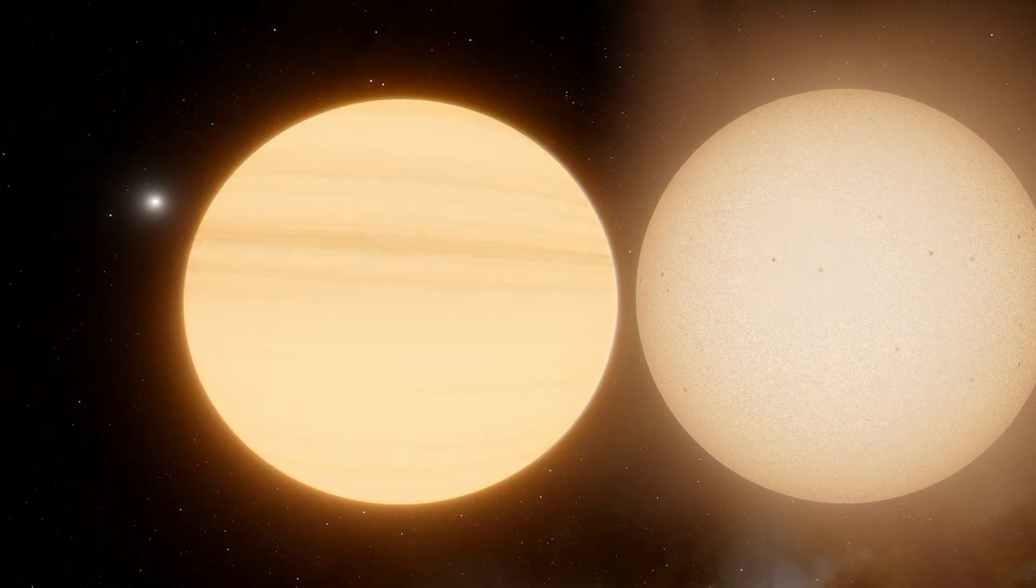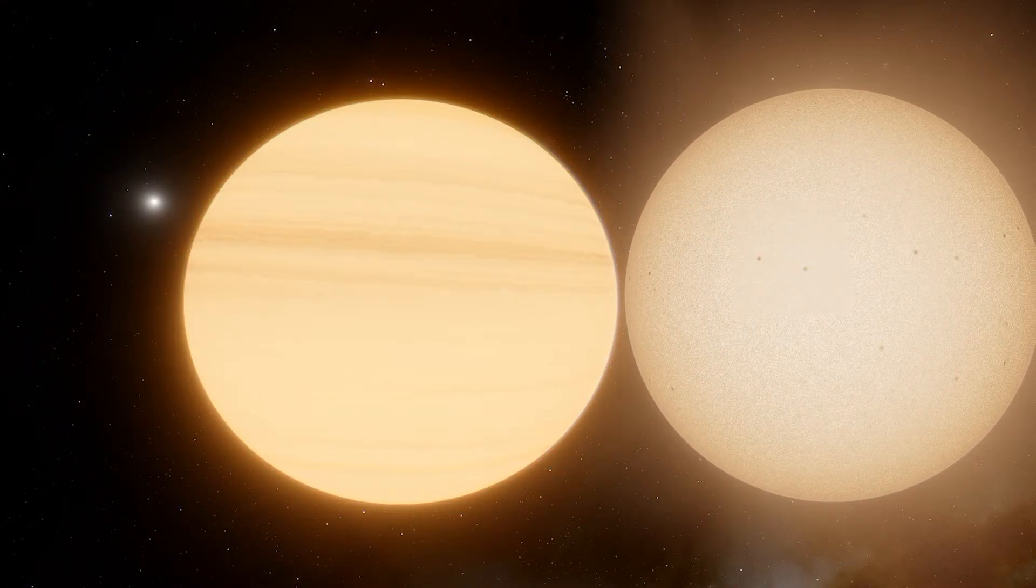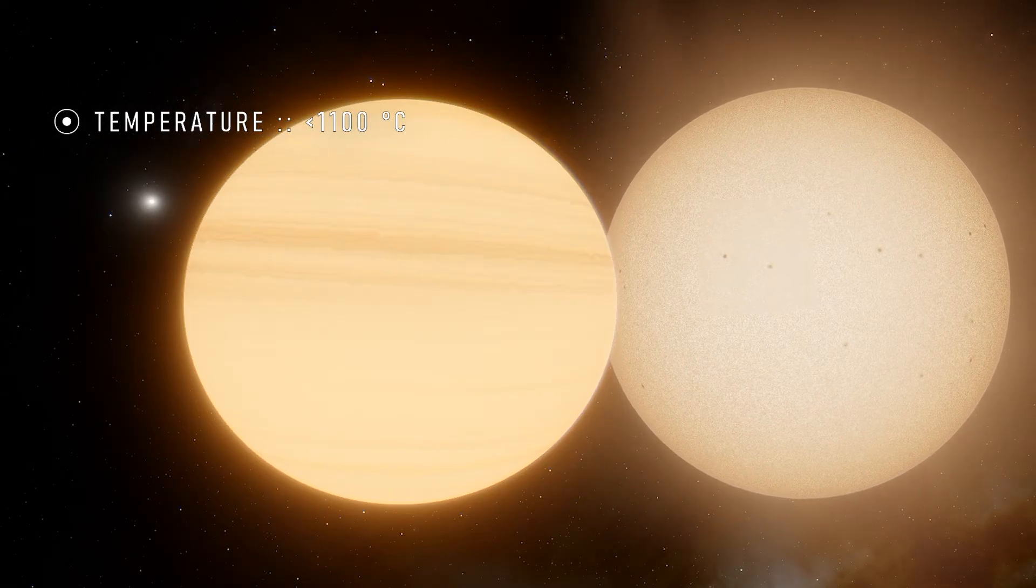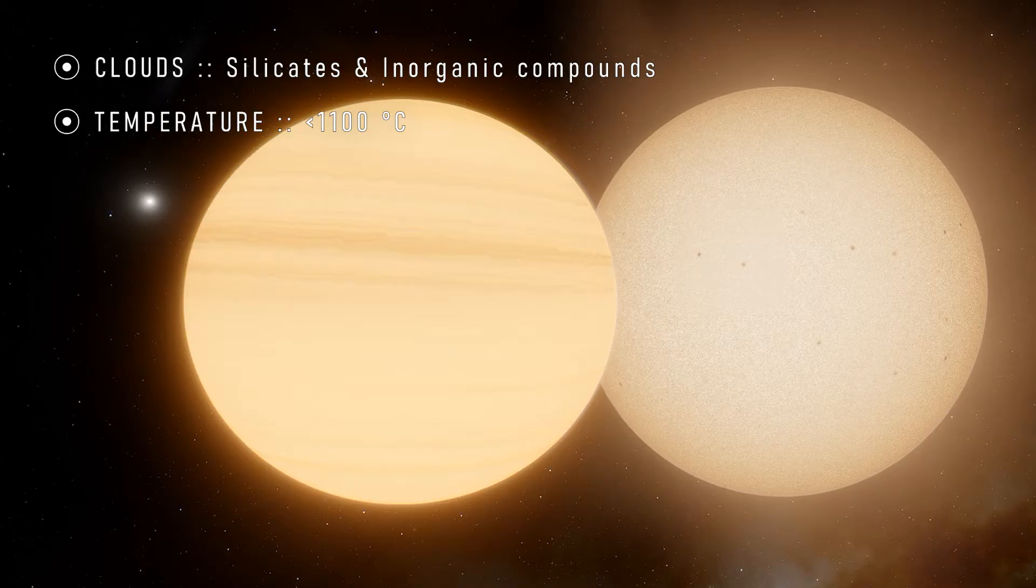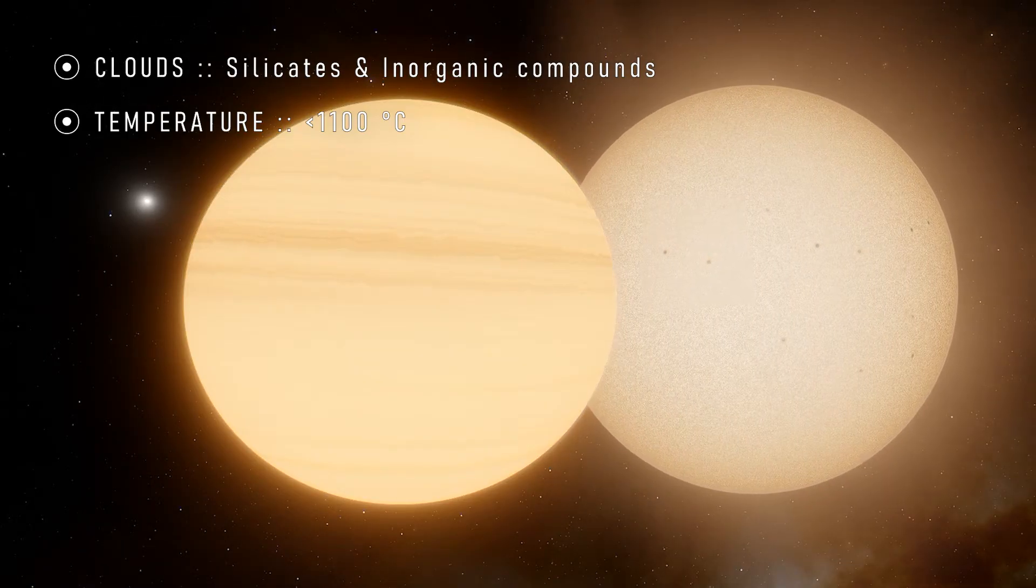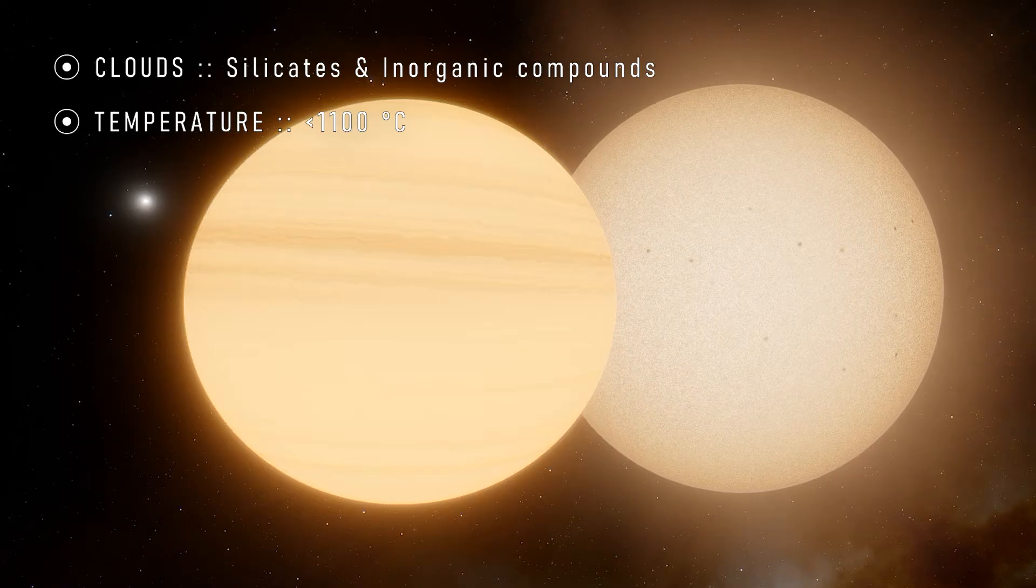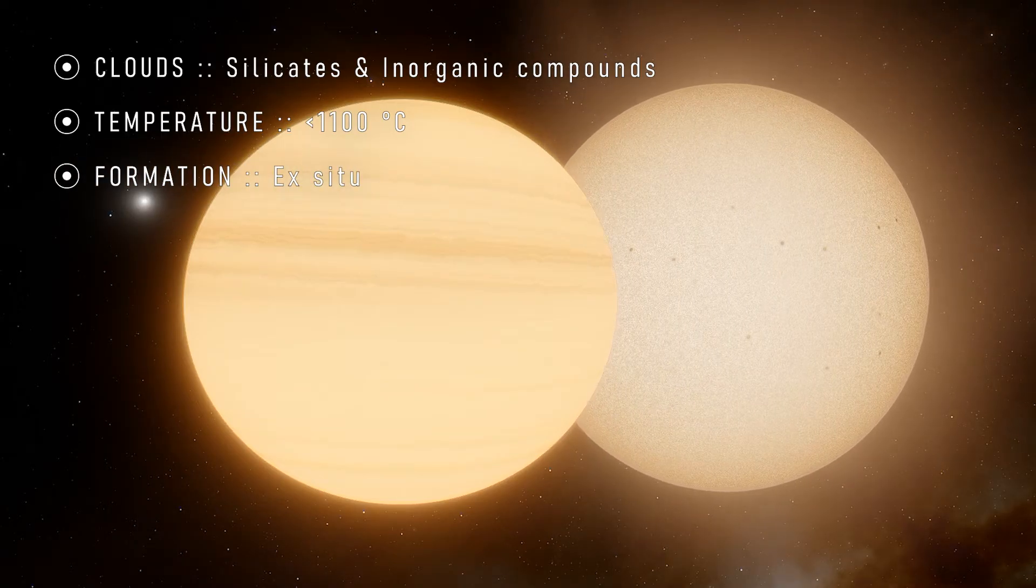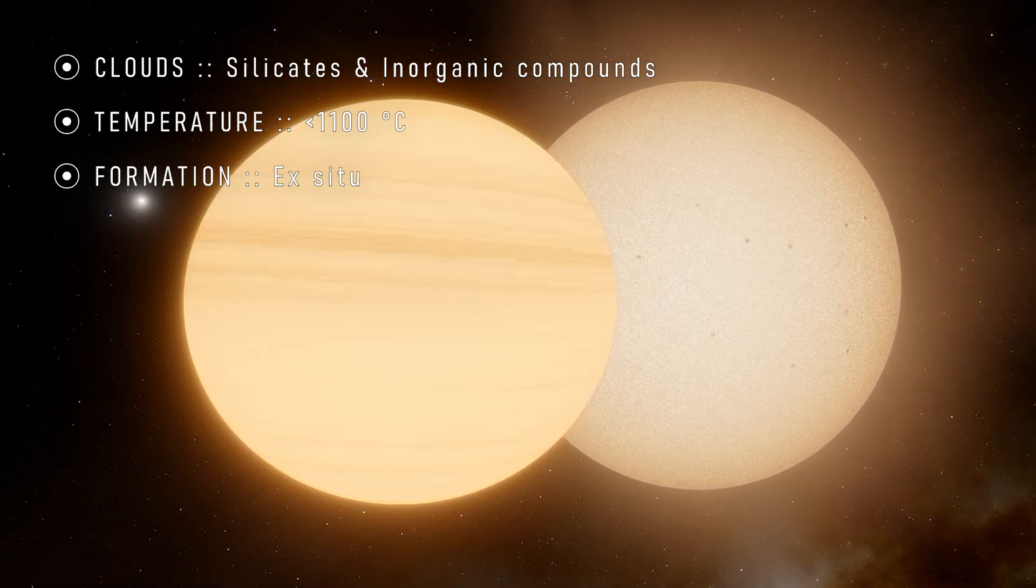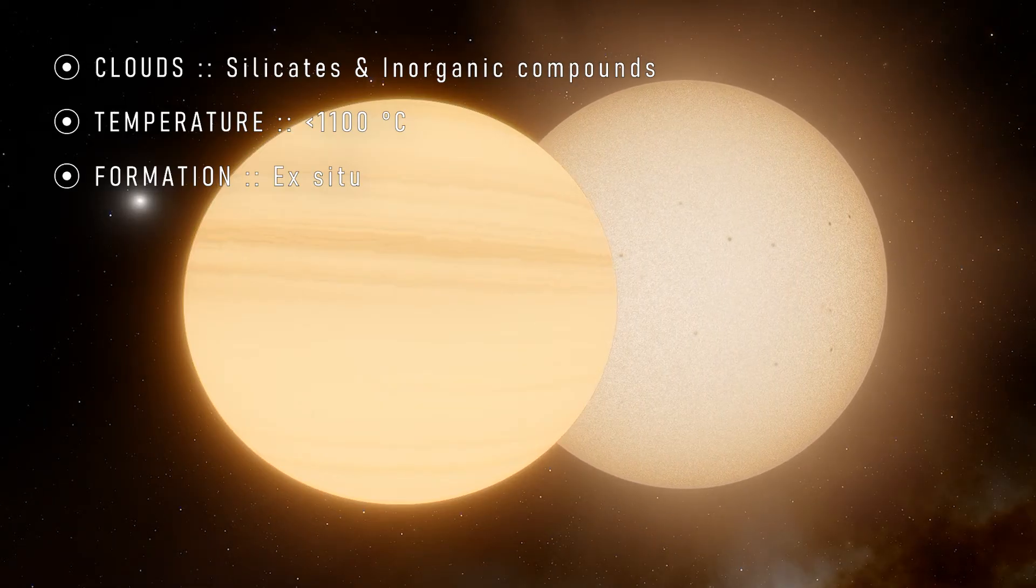Type 5 giants are the hottest of hot Jupiters, exceeding temperatures of 1100 degrees Celsius, being so hot that silicate clouds might exist high up in the atmosphere. At these temperatures, the giant clouds may softly glow from thermal radiation. Around main sequence stars, these planets would have to exist within mere millions of kilometres from their stars, but around giant massive stars, they could exist further out.